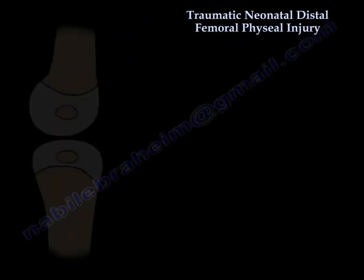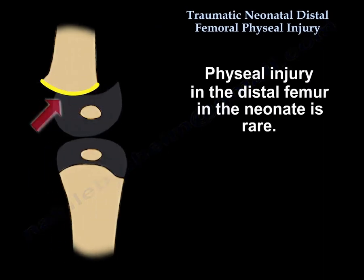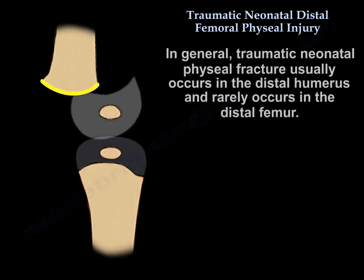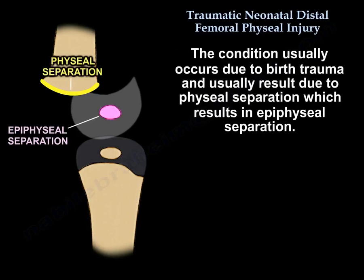Traumatic neonatal distal femoral physeal injury. Physeal injury in the distal femur in the neonate is rare. In general, traumatic neonatal physeal fractures usually occur in the distal humerus and rarely occur in the distal femur. The condition usually occurs due to birth trauma and usually results from physeal separation, which results in epiphyseal separation.